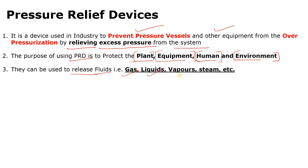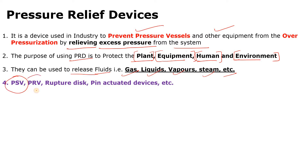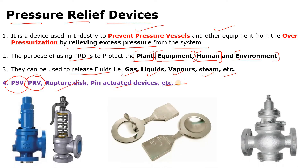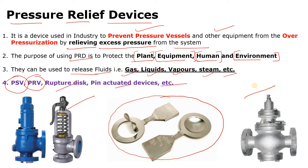Pressure relief devices can release fluids from the system, including gases, liquids like water, vapors, steam, etc. PSV and PRV are examples of pressure relief devices used in our industry to prevent the system from overpressurization. There are also other PRDs such as rupture discs and pin-actuated devices. In the picture you can see a rupture disc, and also PSV and PRV used to prevent overpressurization.